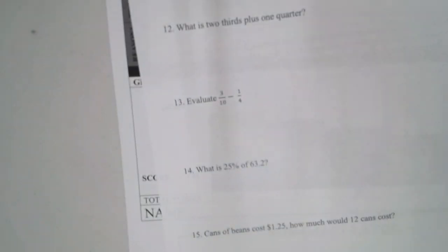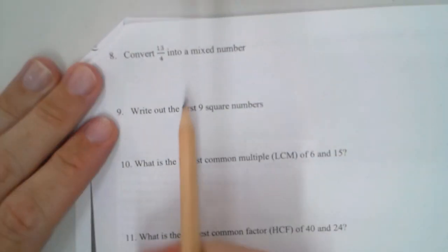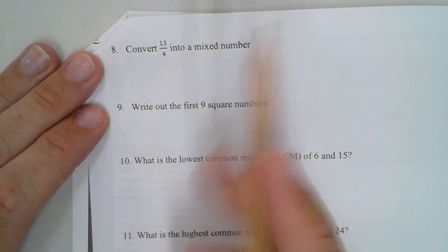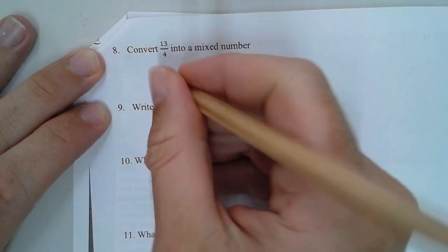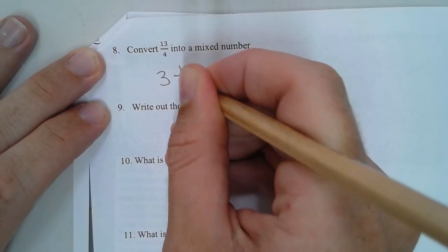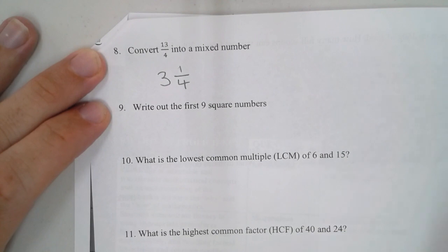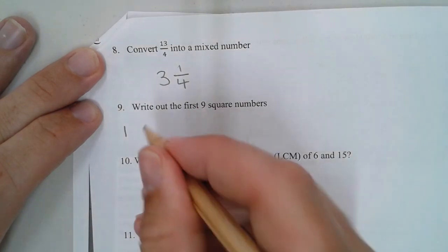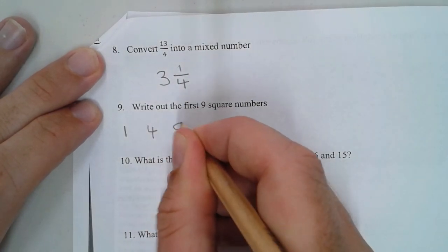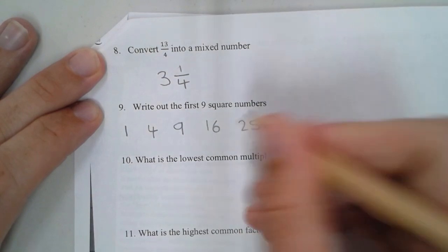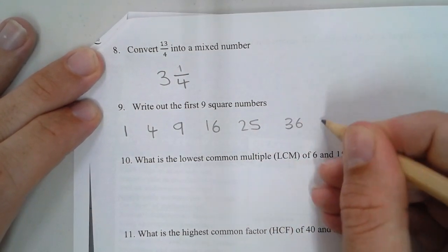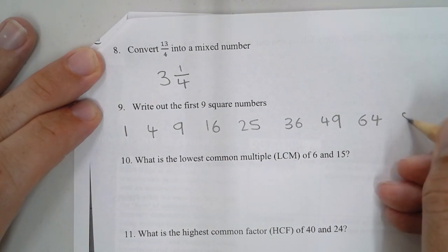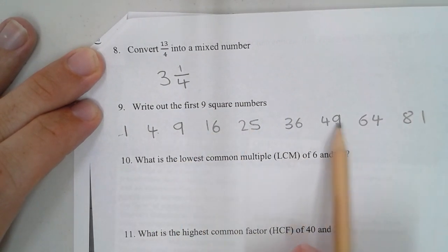Number eight: convert 13 over 4 into a mixed number. How many times does 4 go into 13? It's 3. 3 times 4 is 12, so there's 1 left over: 3 and a quarter. Write out the first nine square numbers: 1, 4, 9, 16, 25, 36, 49, 64, and 81.